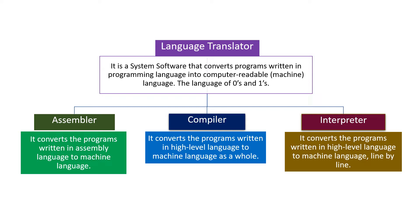There are three types of translators. The first is assembler, which converts programs written in assembly language to machine language. The next is compiler, which converts programs written in high-level language to machine language as a whole. And the last is interpreter, which converts programs written in high-level language to machine language line by line.